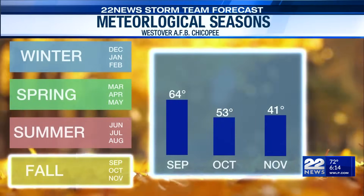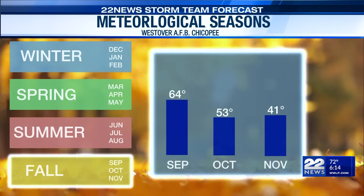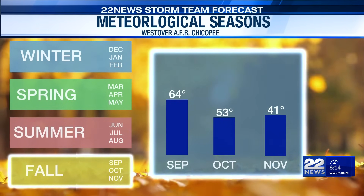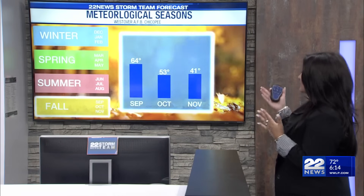Taking a look here, we have winter, spring, summer, and fall. We're starting the fall season, which equals September, October, and November. The average temperature around September is 64 degrees, 53 in October, and 41 in November. Meteorological seasons go by the data, by the climate.